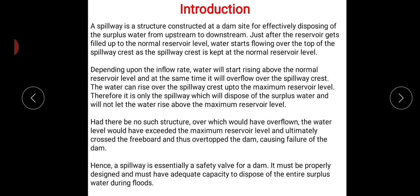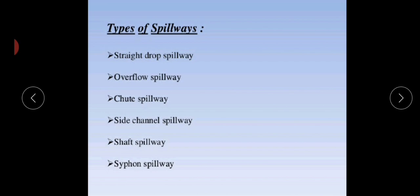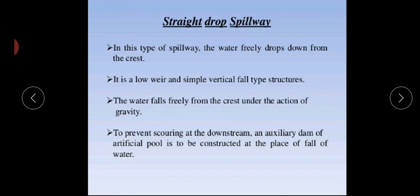There are different types of spillways: straight drop spillway, overflow spillway, chute spillway, side channel spillway, shaft spillway, and siphon spillway. These are differentiated depending upon the structure, the position where the structure is built, and the working of the structures.